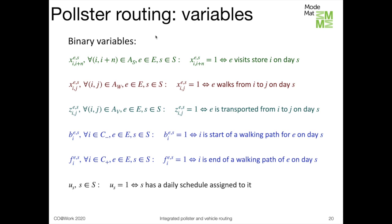Here are the decision variables for the pollster routing part — they are all binary variables. There are three sets of variables linked to arcs of the network, to pollsters, and to days within the time horizon. Each takes the value 1 if the corresponding arc is used on the service schedule of the corresponding pollster on the corresponding day. So x_{i,i+n,e,s} equals 1 if pollster e visits store i on day s; x_{i,j,e,s} equals 1 if e walks from node i to node j on day s; and similarly x_{i,j,e,s} equals 1 if pollster e is transported by a vehicle from node i to node j on day s.